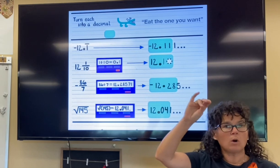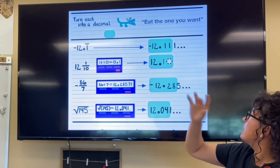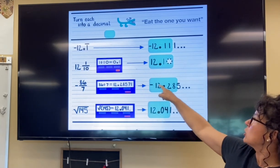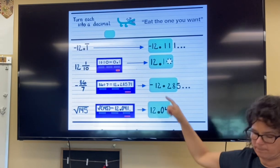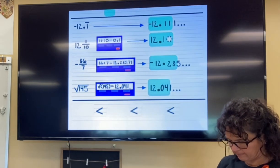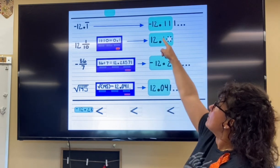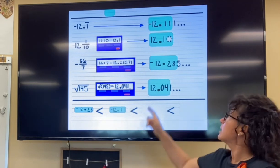Remember, you want to eat the one you want. The smallest one is the worst situation. So in the situations here, owing somebody $12.28 would be the worst. And then after that, owing somebody $12.11, that's a little bit better.